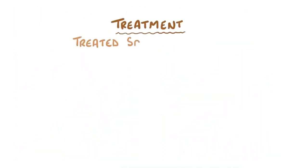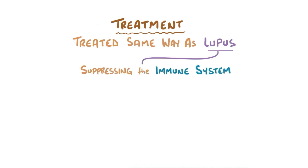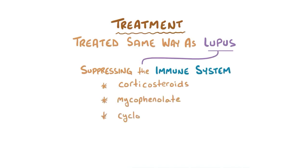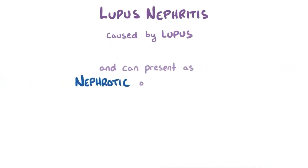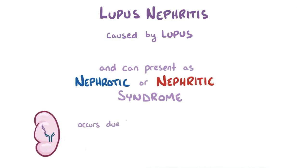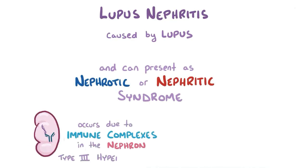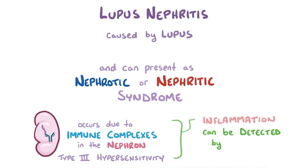Lupus nephritis is treated the same way that lupus is treated — by suppressing the immune system. This is often done with corticosteroids, as well as with specific medications like mycophenolate and cyclophosphamide. As a quick recap, lupus nephritis is inflammation of the kidneys caused by lupus, and it can present as either nephrotic or nephritic syndrome. It happens due to the deposition of immune complexes in the nephron, which is a type 3 hypersensitivity reaction, and the resulting inflammation causes damage that can be detected on a kidney biopsy.